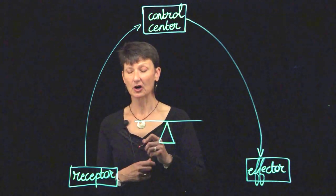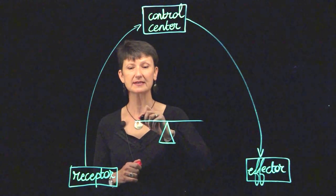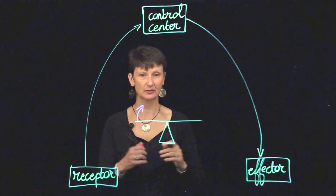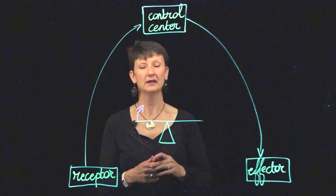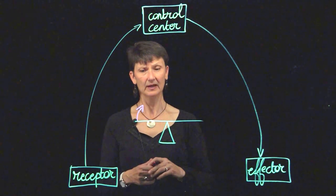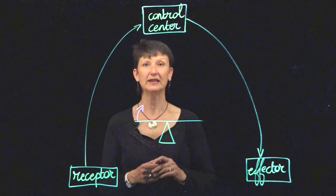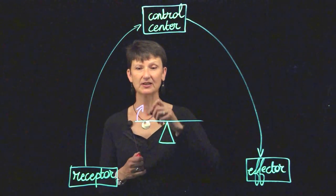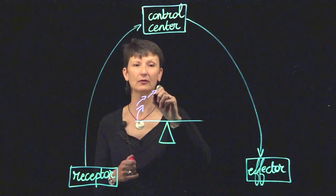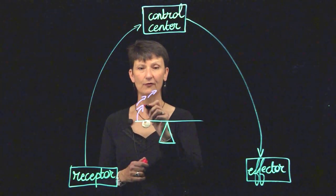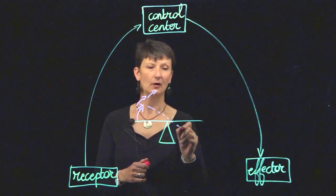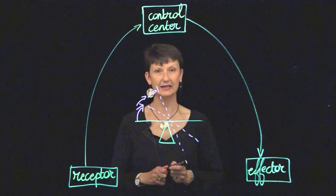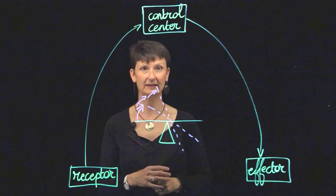Once again, we're going to start with some kind of a stimulus that causes the body to deviate from its homeostatic condition, from this balance that we try to maintain. What happens in a positive feedback mechanism is that the response is going to be such that we're going to deviate further and further away from our balance point. And so this is what we're starting to see happening, and you can see that this cannot go on endlessly.